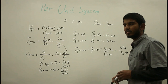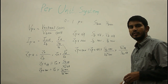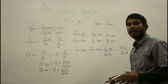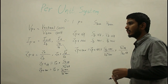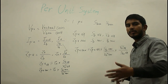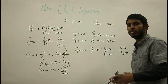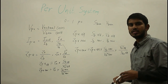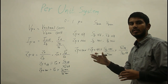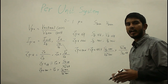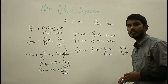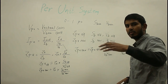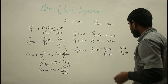The advantage of the per-unit system is that an electrical quantity — whether voltage, current, or impedance — when referred from one side of a transformer to the other, there is no change in the per-unit values. That means Z per unit referred to the primary side equals Z per unit referred to the secondary side. This is a great advantage of the per-unit system. Additionally, the values of parameters or electrical quantities fall within a narrow range compared to their actual values.